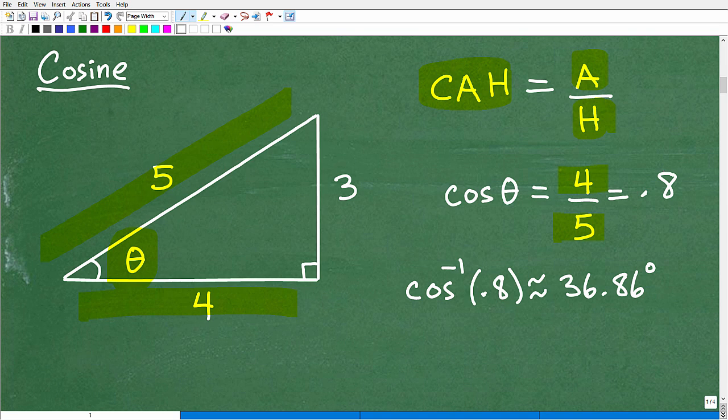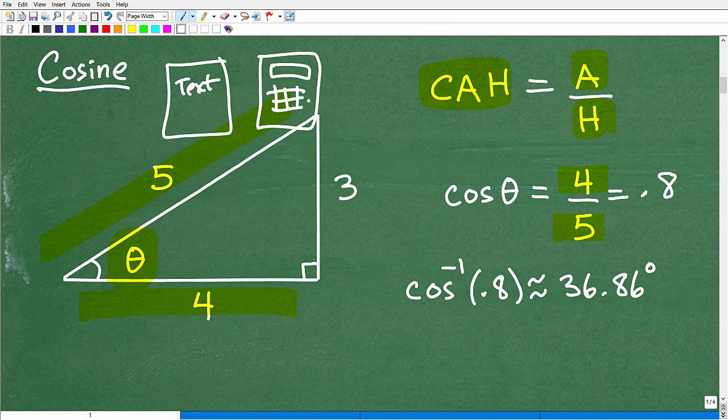So again, we're going to focus on using the cosine for this function. The cosine is CAH, right? So it's the adjacent over the hypotenuse. Here's my angle—my adjacent is 4, and the hypotenuse, the longest side, is 5. So the cosine of this angle is 4 over 5, and that is the decimal 0.8. Now, this is where we need help from either a textbook or a calculator—preferably a calculator.